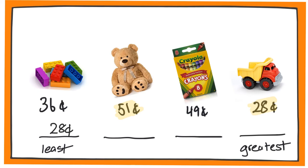So we will write it there. The next smallest number are the building blocks, which cost 36 cents. So we'll write it right next to the smallest number.